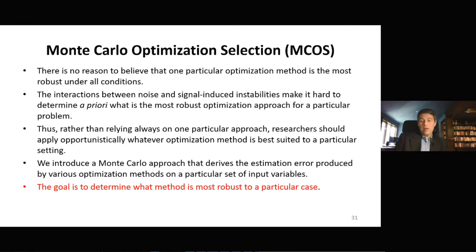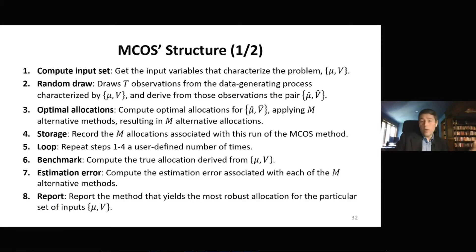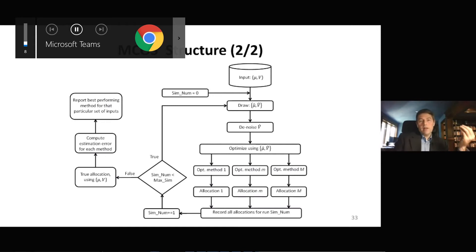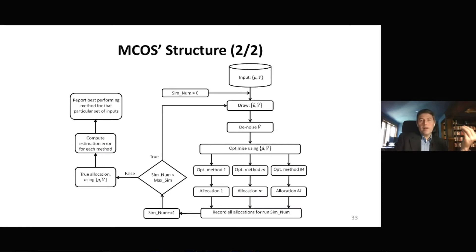The steps are: first, we compute or obtain the input set from your favorite provider. Then we produce random draws that lead to sample inputs. Based on that, we compute optimal allocations for 20 or 50 different optimization algorithms, evaluating which solution leads to the lowest root mean square error. Rather than expecting that there will be some algorithm that will always dominate, I would like people to be more experimental — identify the particular tool for this input set. In that way, we will have all of these algorithms in our toolbox, and we will apply the right tool for each job.